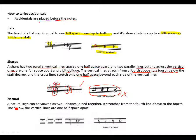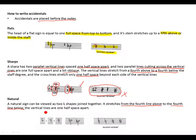A natural sign can be viewed as two L-shapes joined together. It stretches from the fourth line above to the fourth line below. The vertical lines are one half space apart. Here is the first L, joined with the second one to form the natural sign — nicely joined, forming our natural sign.